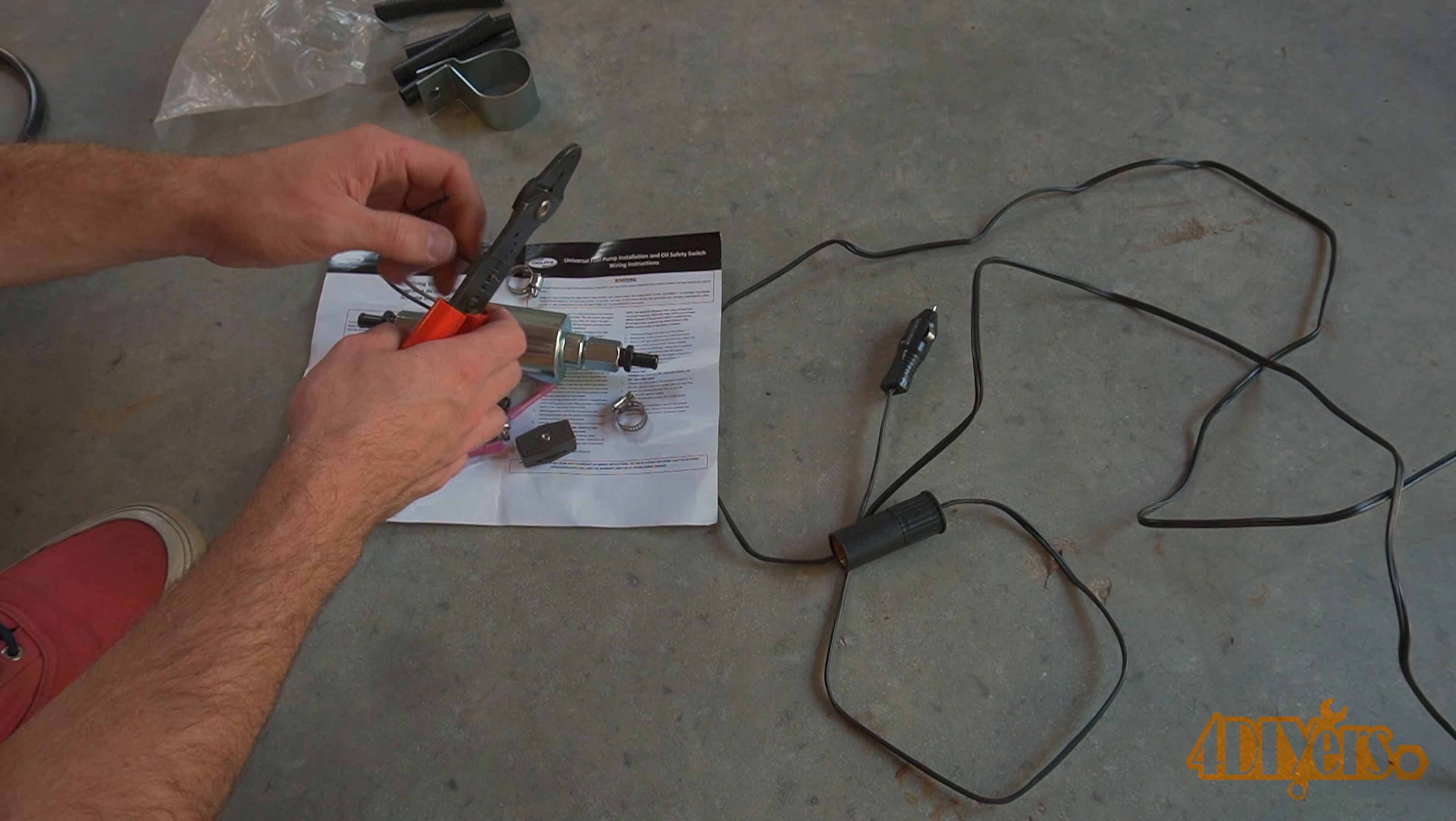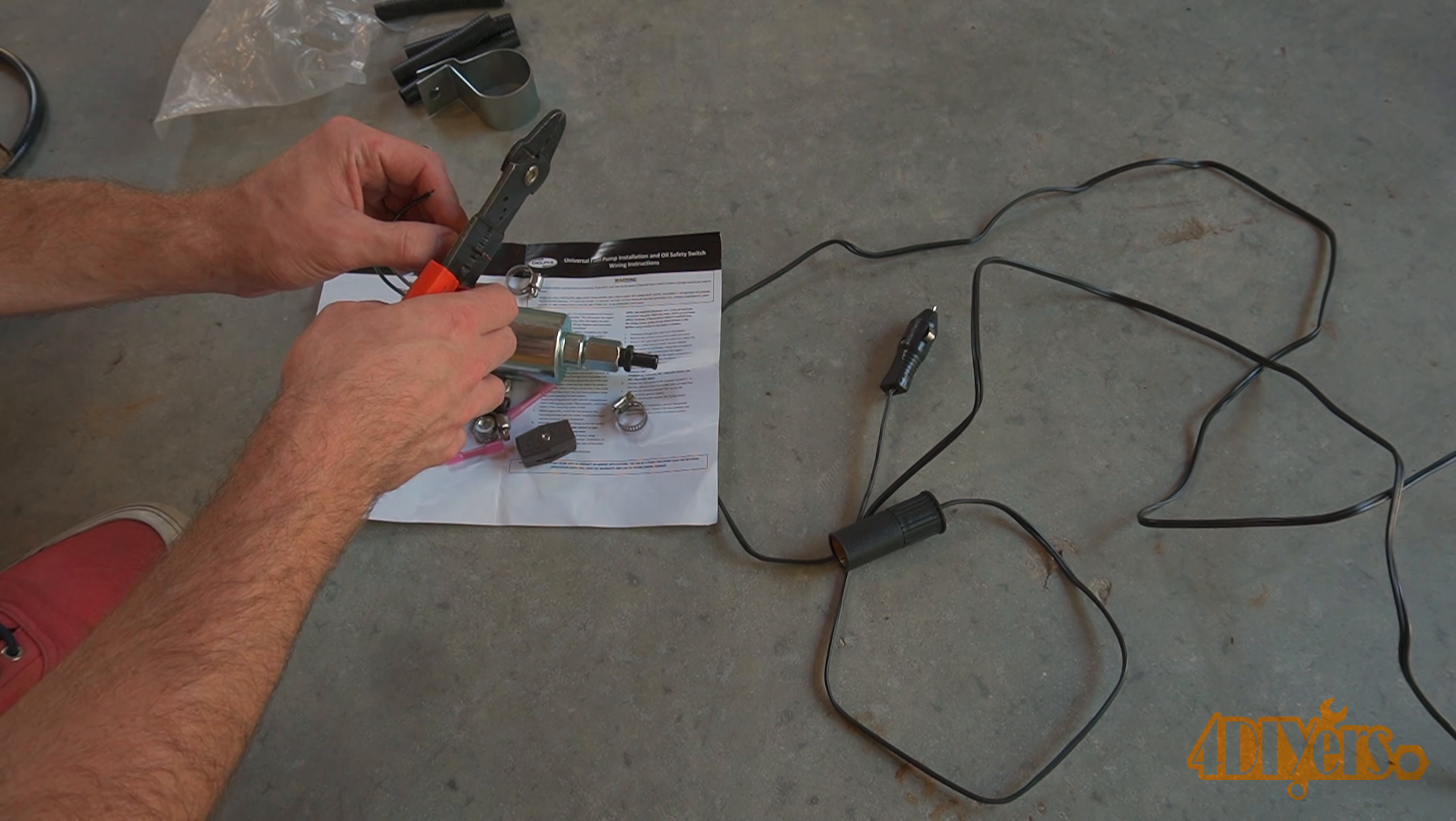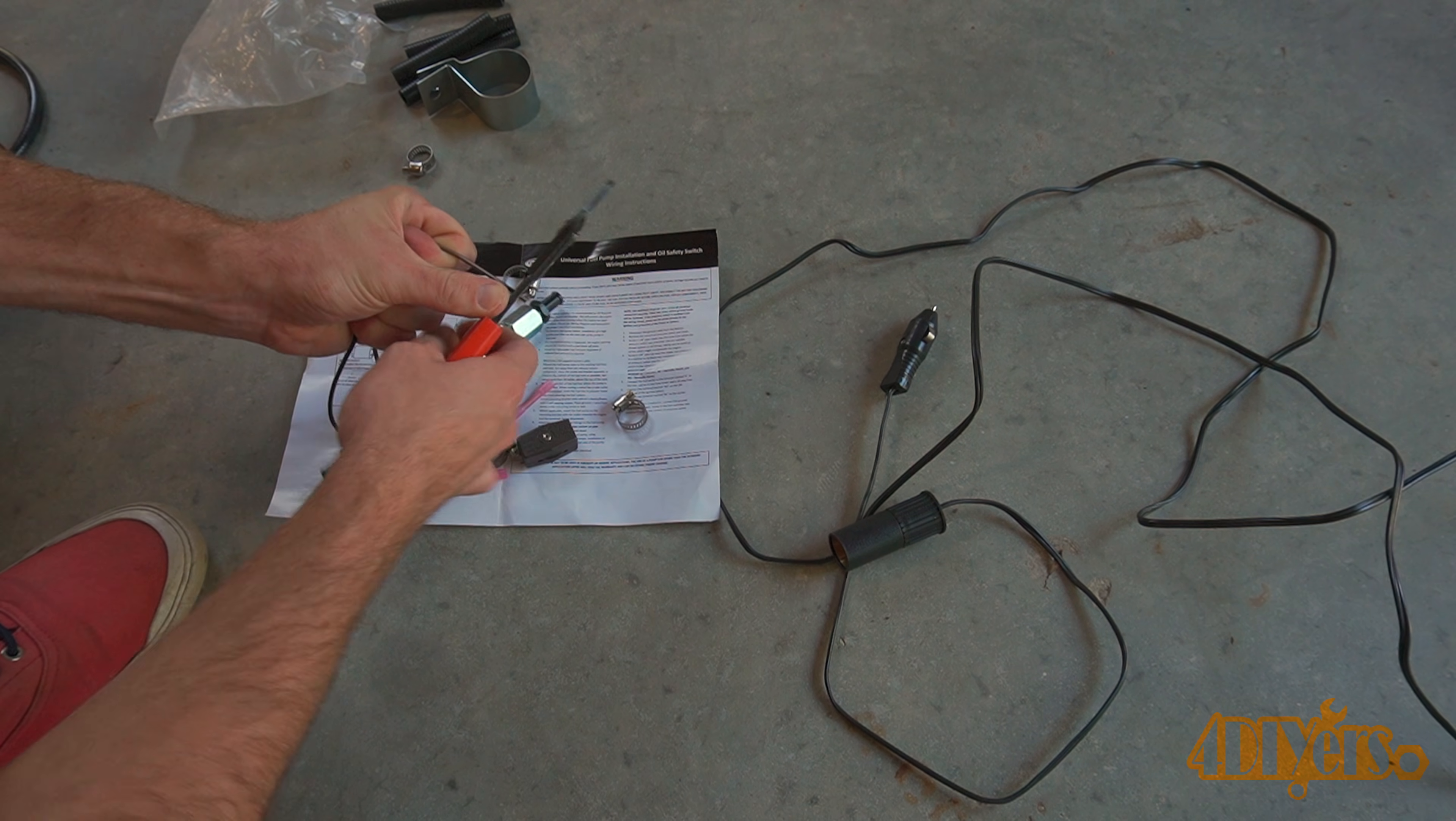First was stripping the wires of the fuel pump. The fuel pump only has two wires - the black is the ground and the brown is the power.